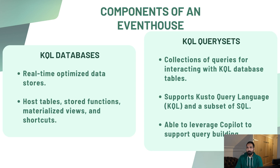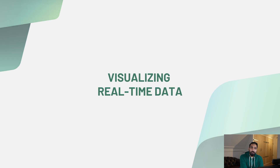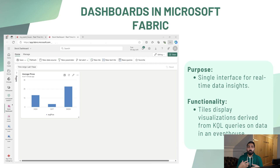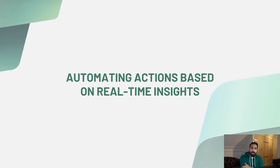For visualizing real-time data, you can directly create real-time dashboards from the real-time data hub or Event House. This is your single interface to visualize real-time data. The dashboard will have different tiles generated from running KQL queries against your Event House tables, allowing you to see how your data is changing over time.